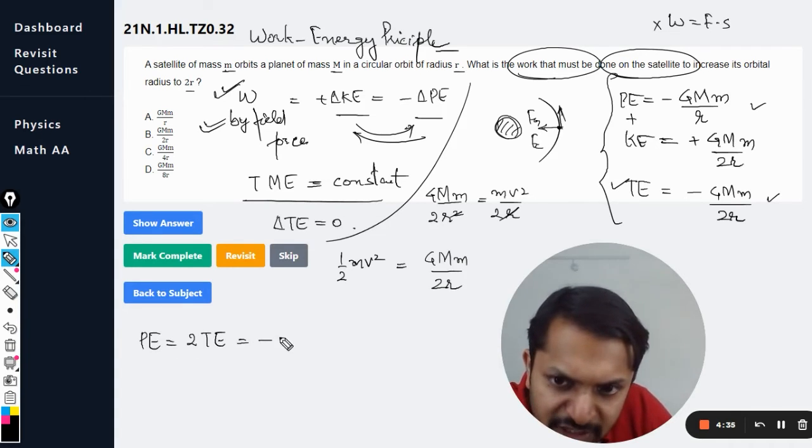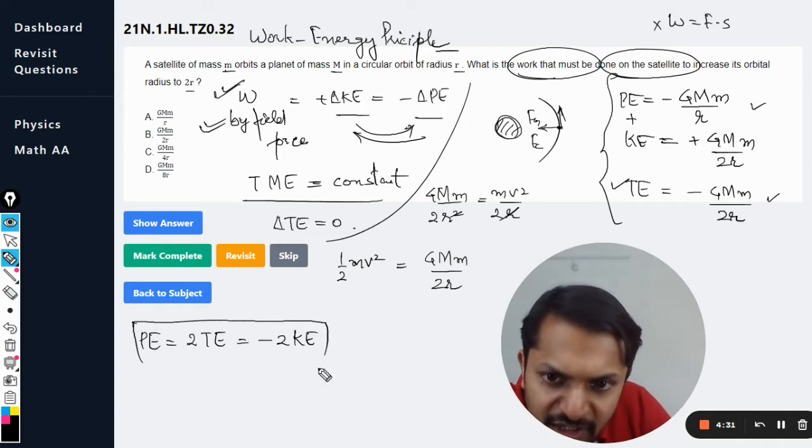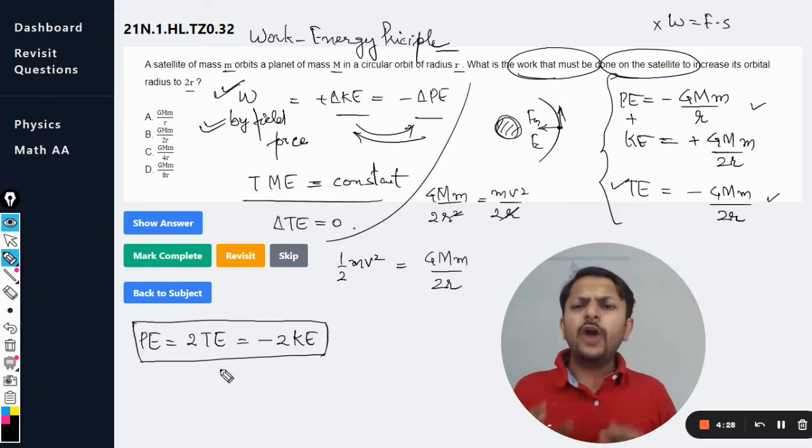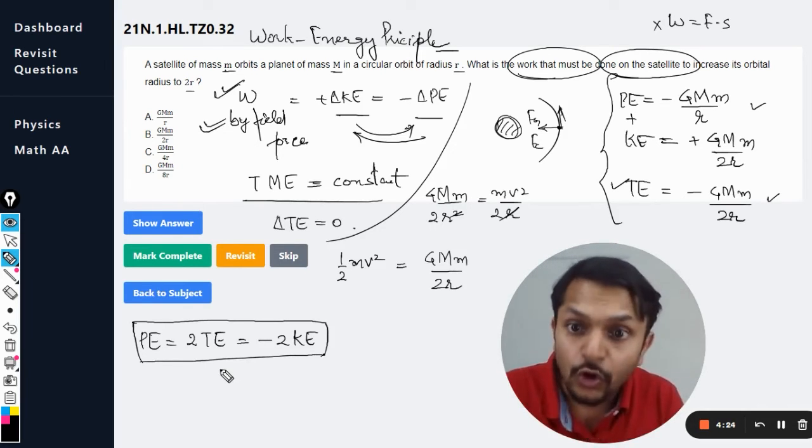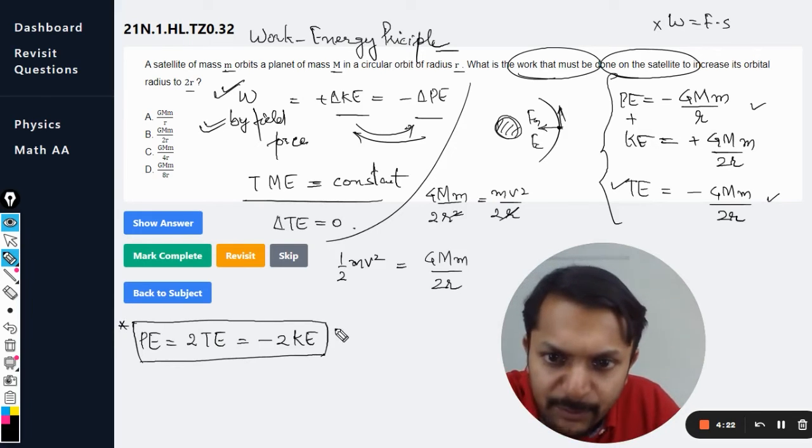This condition is when you can say that the potential energy is equal to twice the total energy and it is equal to the negative of twice the kinetic energy. This is another very important equation, though it would not be actually required for you people. This condition is known as bound state.